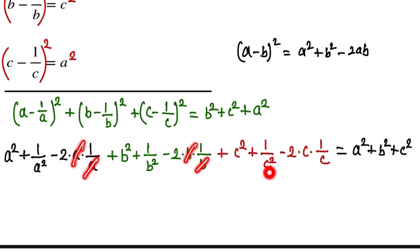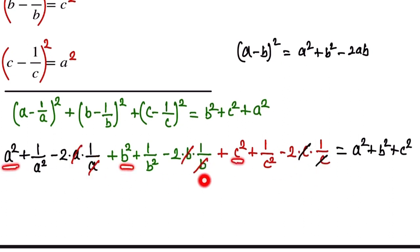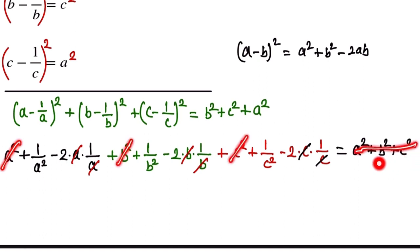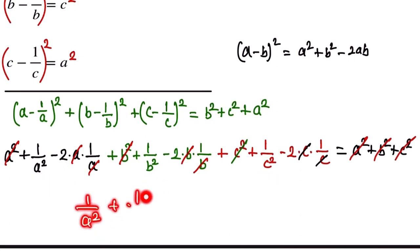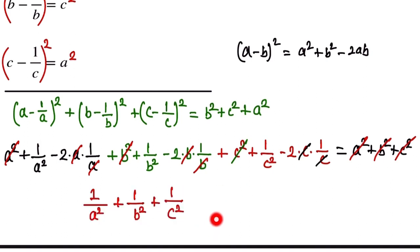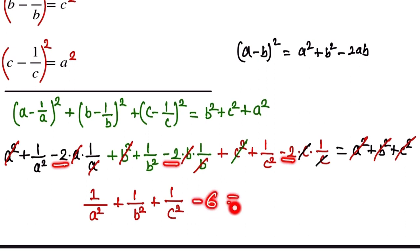Now we simplify. The terms 2·a·(1/a) = 2, 2·b·(1/b) = 2, and 2·c·(1/c) = 2, so the −2 terms sum to −6. The a², b², and c² terms cancel on both sides. The remaining part is: 1/a² + 1/b² + 1/c² − 6 = 0.